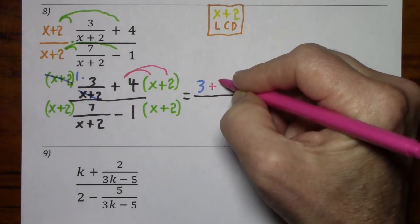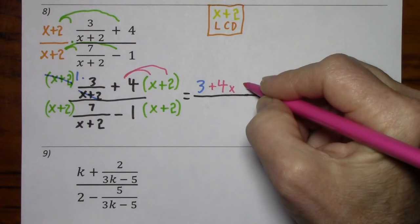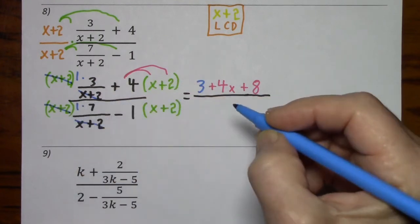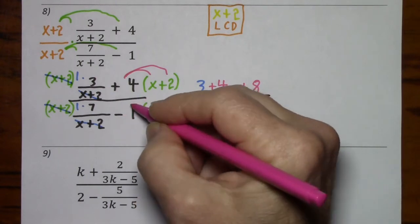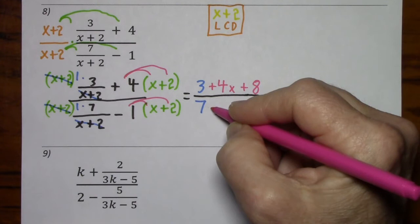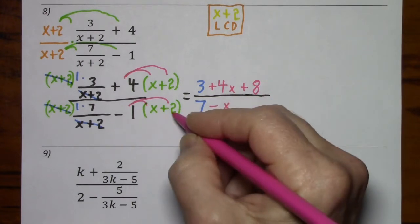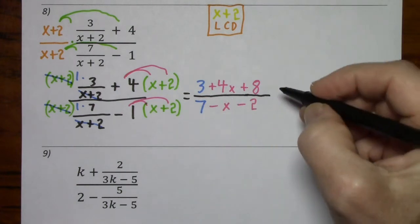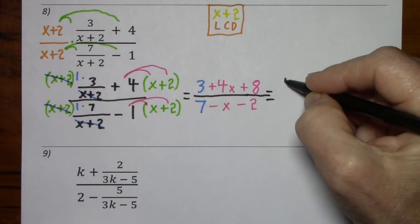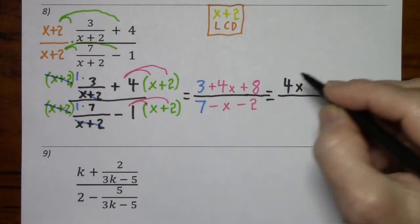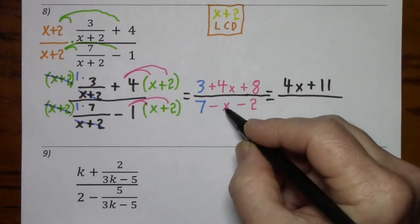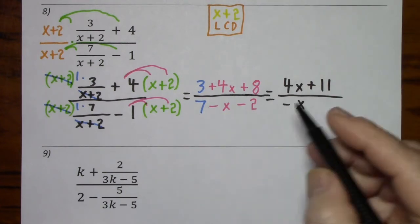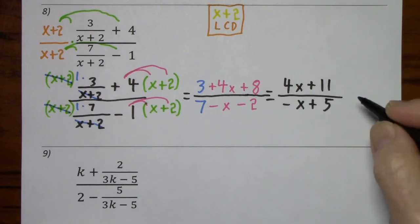Over here, there's nothing to cancel, but we have to distribute a positive 4 to each term inside parentheses — so it'll be plus 4x and plus 8. Here, x plus 2 goes into x plus 2 one time, so 1 times 7. And here we have negative 1, which has to get distributed to each term — so that's negative x, and negative 1 times positive 2 leaves us with negative 2. We can combine some like terms: put 4x first, 3 and 8 is positive 11. Put negative x first — it's negative 1x but you don't have to write the 1 — and positive 7, negative 2 leaves us with positive 5. This is the simplified form.